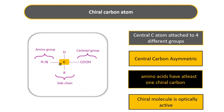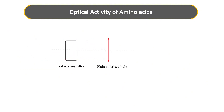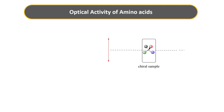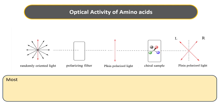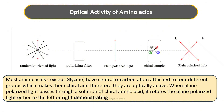Molecules with an asymmetric or chiral carbon atom are optically active, meaning they can rotate plane-polarized light. Since amino acids have a chiral carbon, they are optically active. When unpolarized light passes through a polarizing filter it becomes plane-polarized, and when this plane-polarized light passes through a solution of a chiral amino acid, the amino acid rotates the plane-polarized light either to the right or to the left, demonstrating optical activity.